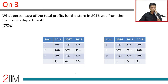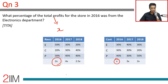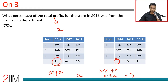What percentage of total store profits in 2016 came from the electronics department? Total profit in 2016 = x (revenue 2x, cost x). Electronics revenue = 50% of 2x = x; electronics cost = 30% of x = 0.3x. Electronics profit = x − 0.3x = 0.7x. Overall profit = x, so electronics contributed 0.7x / x × 100 = 70%.